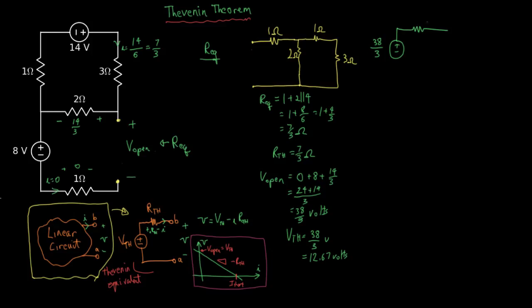Here's our Thevenin equivalent. 7 thirds of an ohm, 38 thirds of a volt. The load resistance, which we had previously removed, we'll put back 4 ohms.